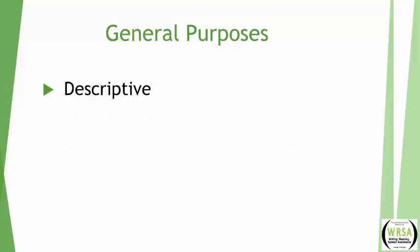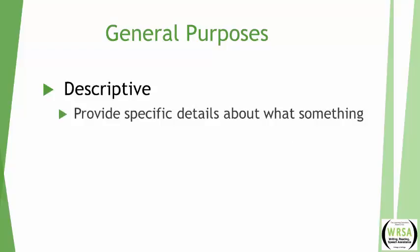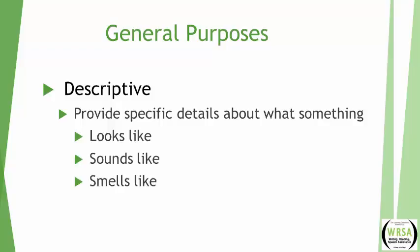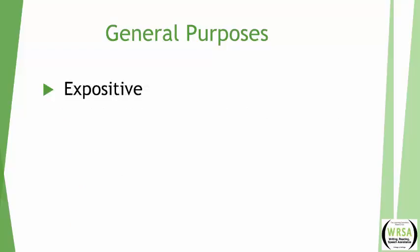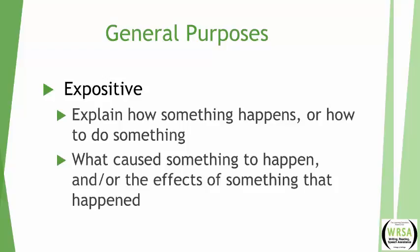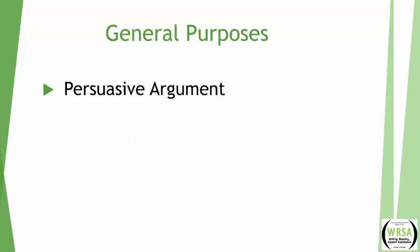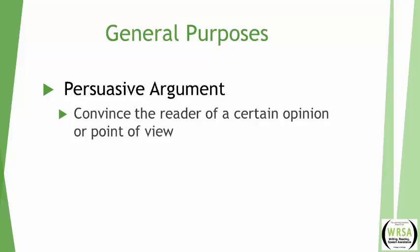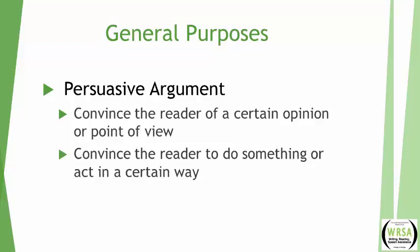Another purpose is descriptive — when you need to give details about what something looks like, sounds like, smells like, tastes like, or feels like. The third is called expositive, one of the more frequent kinds of assignments in academic writing, where you explain something. And finally, there's the persuasive argument, where you want to convince your reader of something that you have probably researched and formed a point of view on.